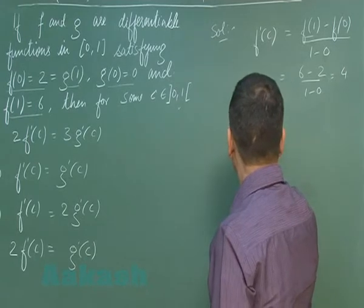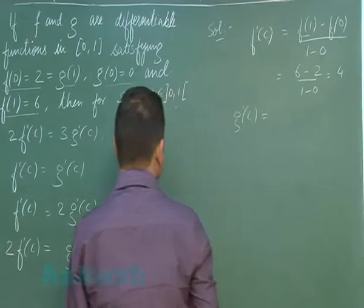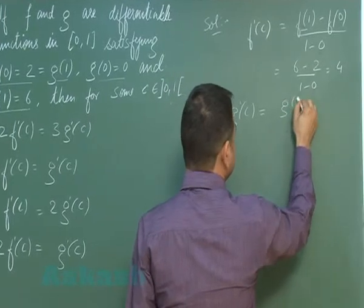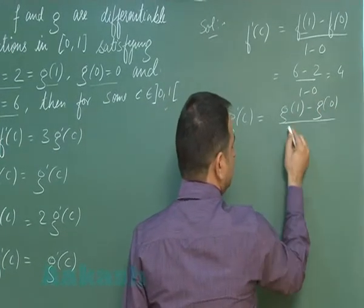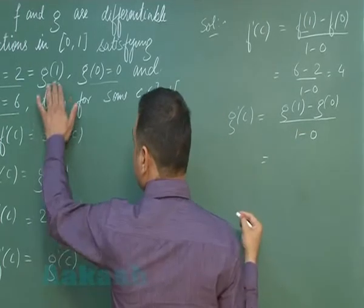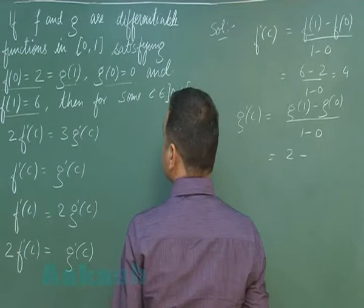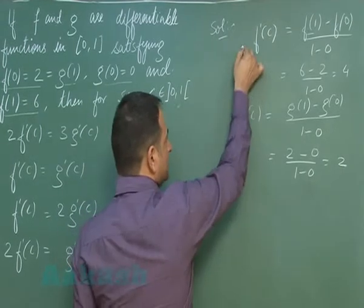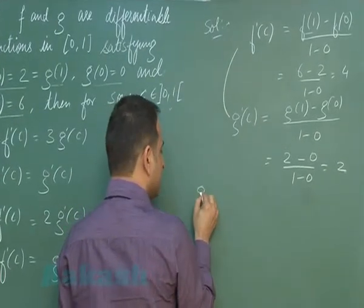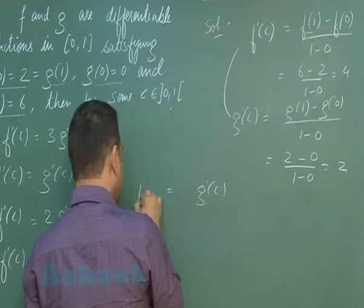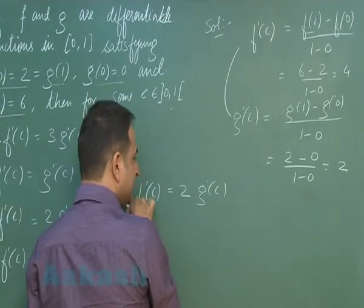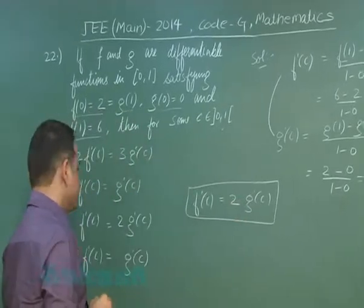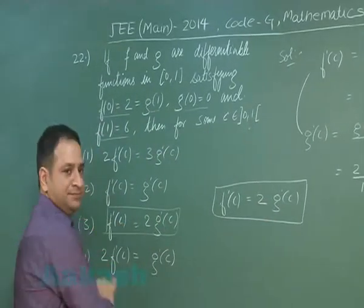Similarly, g'(c) — the slope of function g at some c lying between 0 and 1 — is again found by LMVT: g(1) minus g(0) upon 1, which is 2 minus 0 = 2. Using both results you can see the relation: f'(c) is equal to twice g'(c). That is option number three, the correct one.